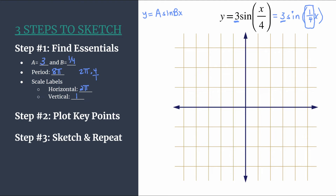Starting with our horizontal axis, counting by 2π: 2π, 4π, 6π, 8π — we'll stop there. Your fourth horizontal tick mark to the right of the origin should match your period with this method, which is a good check. Our fourth tick mark is labeled 8π, so we're on the right track. For the negative side: negative 2π, negative 4π, negative 6π, negative 8π. Now let's label the vertical axis.